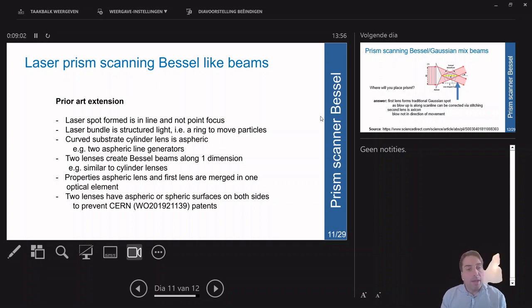To remove the cross-scan error for Bessel beams, you can employ a similar plot where your first lens focuses the light parallel to the scan lines and creates a Bessel beam. The second lens focuses orthogonal to the scan line and also creates a Bessel beam, but now they are Bessel beams and not Gaussian beams.